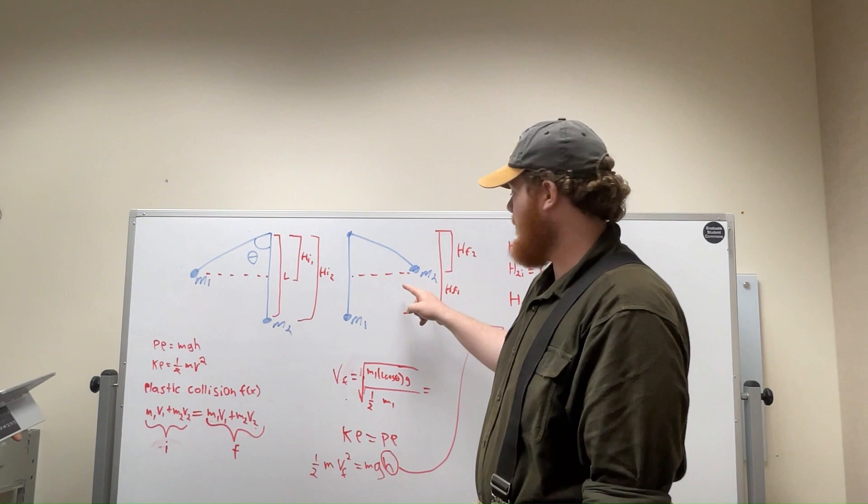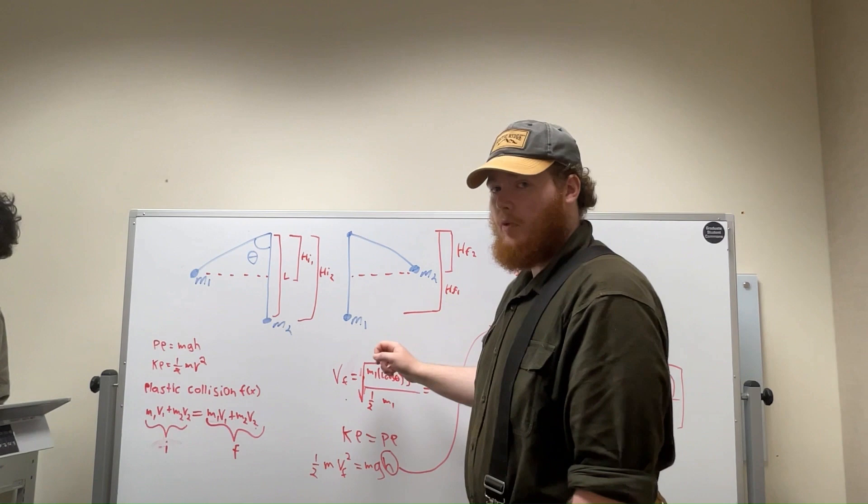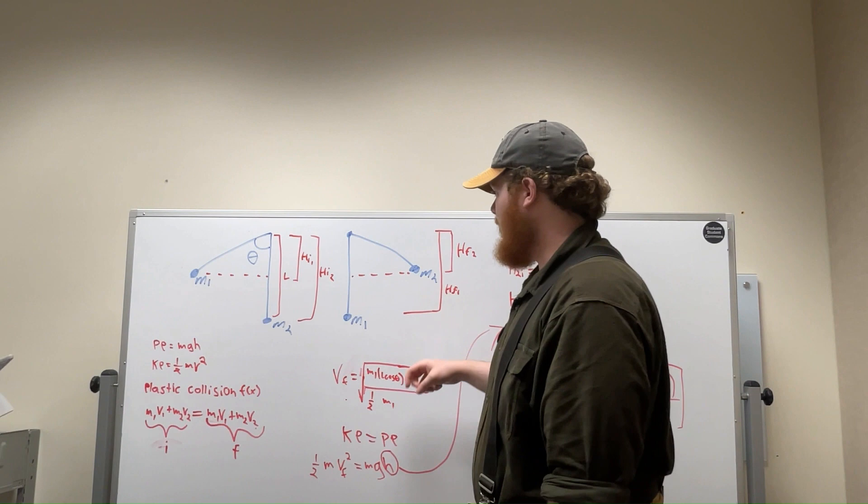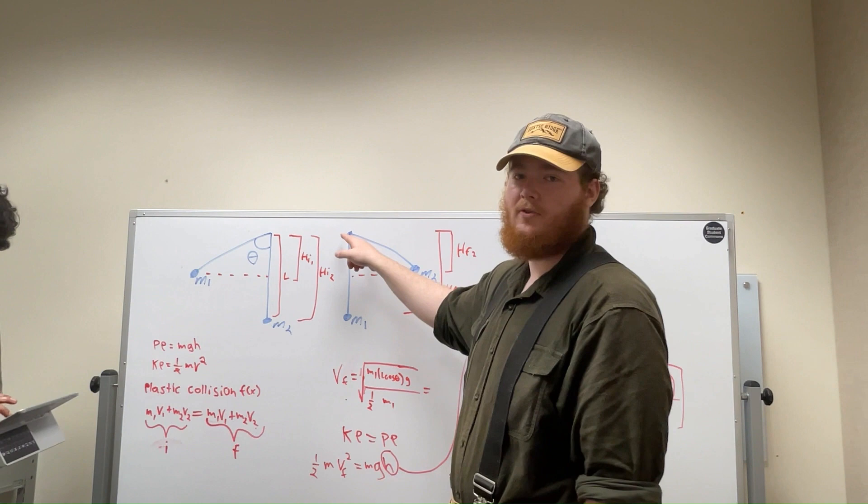It swings ball M2 up an unknown distance, while ball M1 remains at an unknown distance, HF1, based off of the point that both ropes are tied off as our origin point.